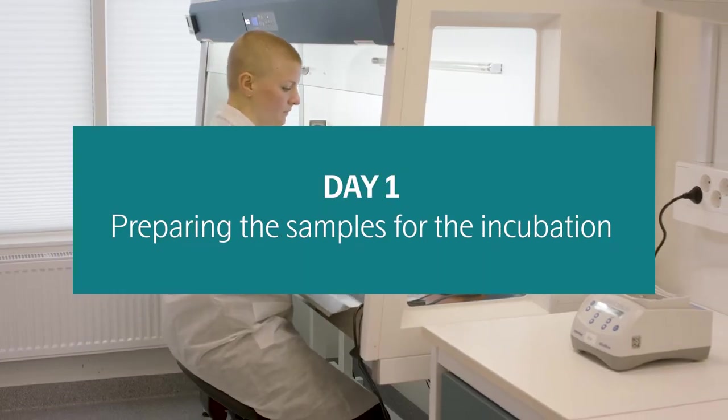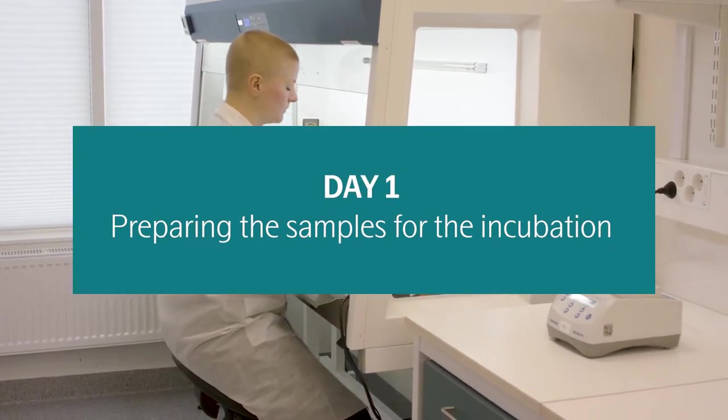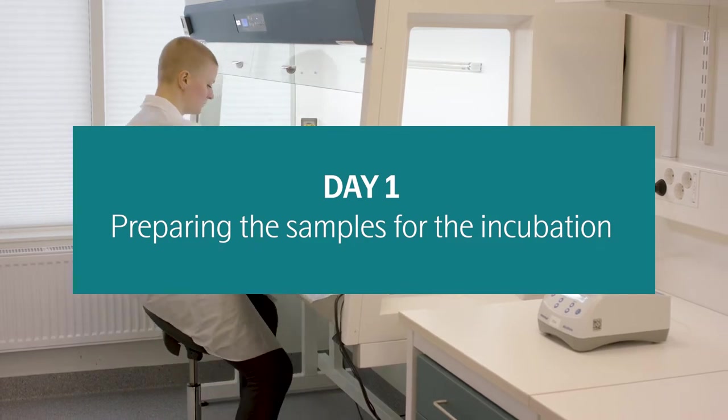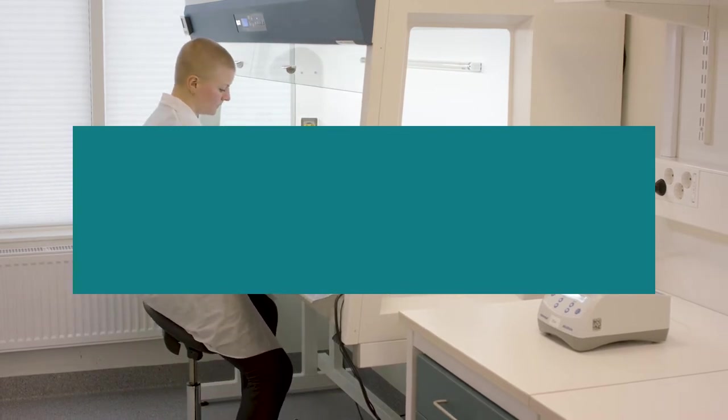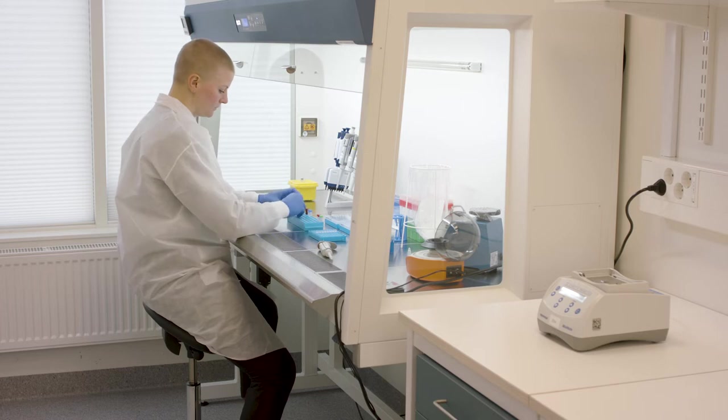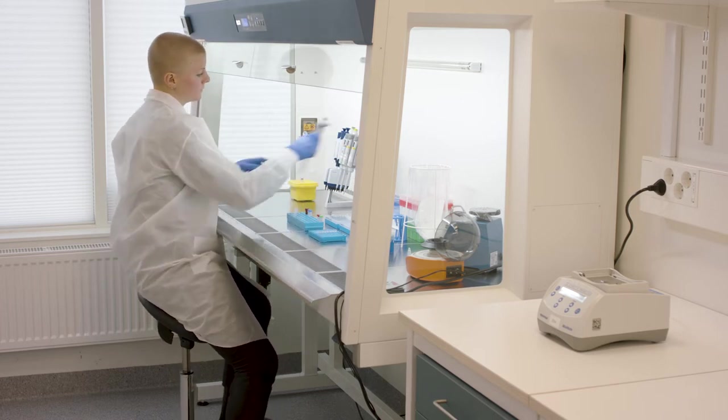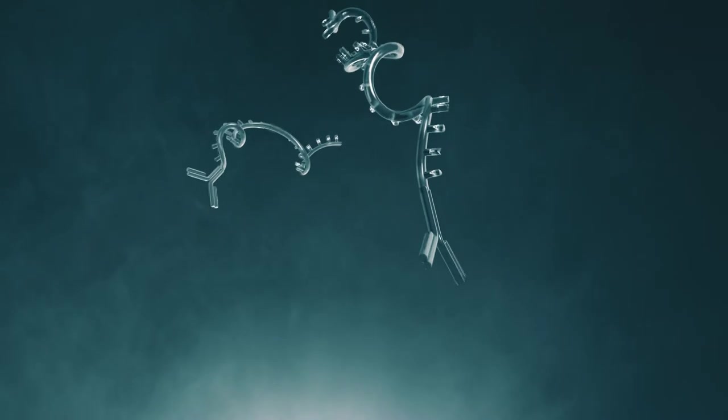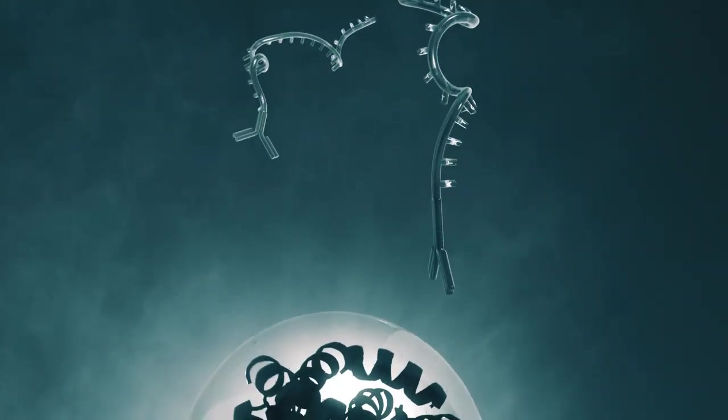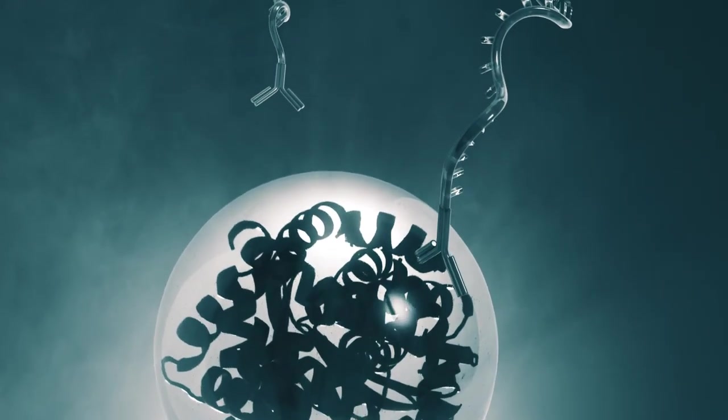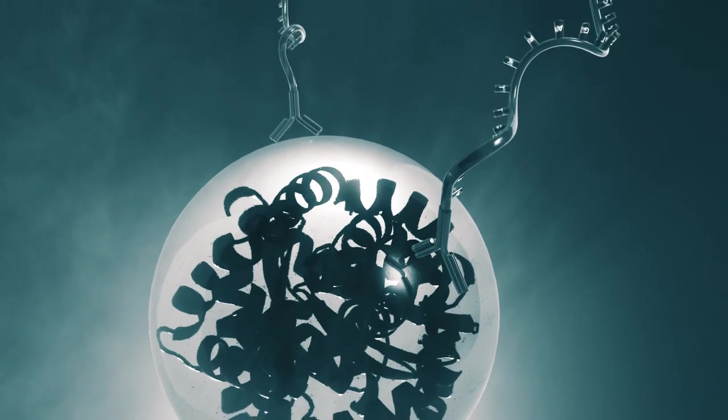We begin the target 48 workflow by preparing the samples for the incubation and then incubating overnight. All lab work for day one will take place in the pre-PCR room. During the incubation, antibody pairs with conjugated DNA tags are added to the samples and allowed to bind to the target proteins during an overnight incubation.